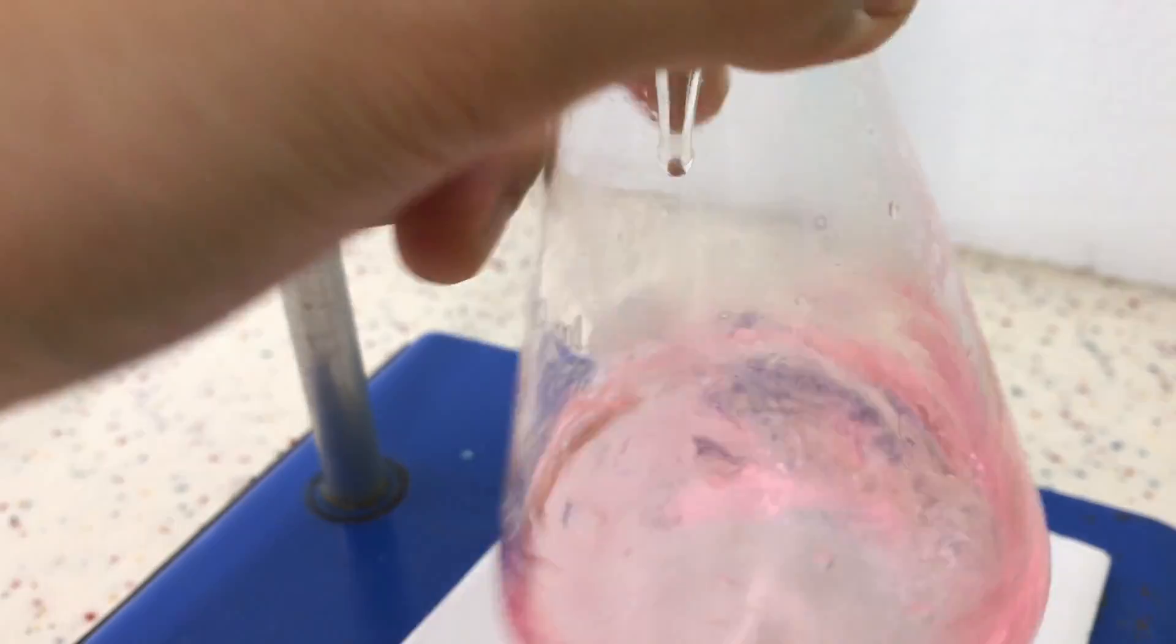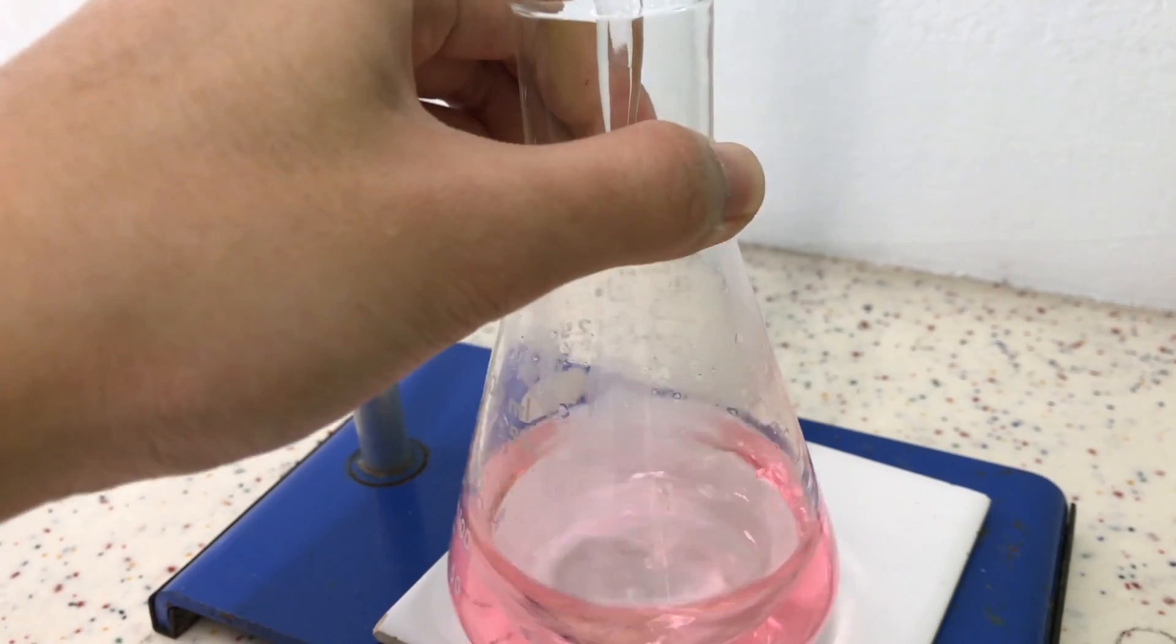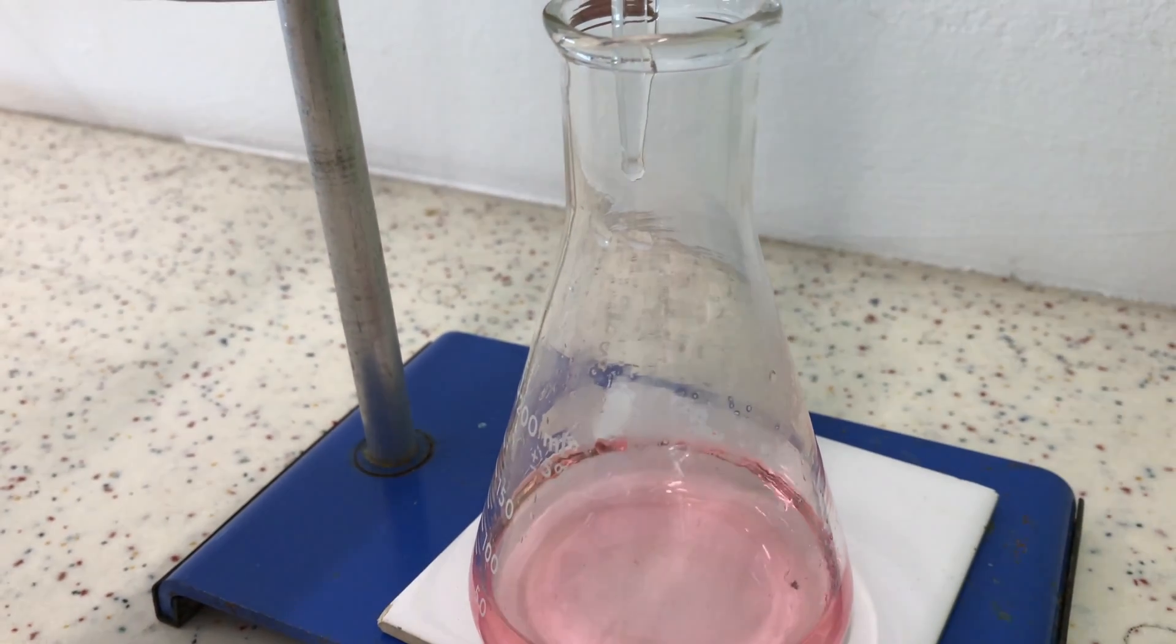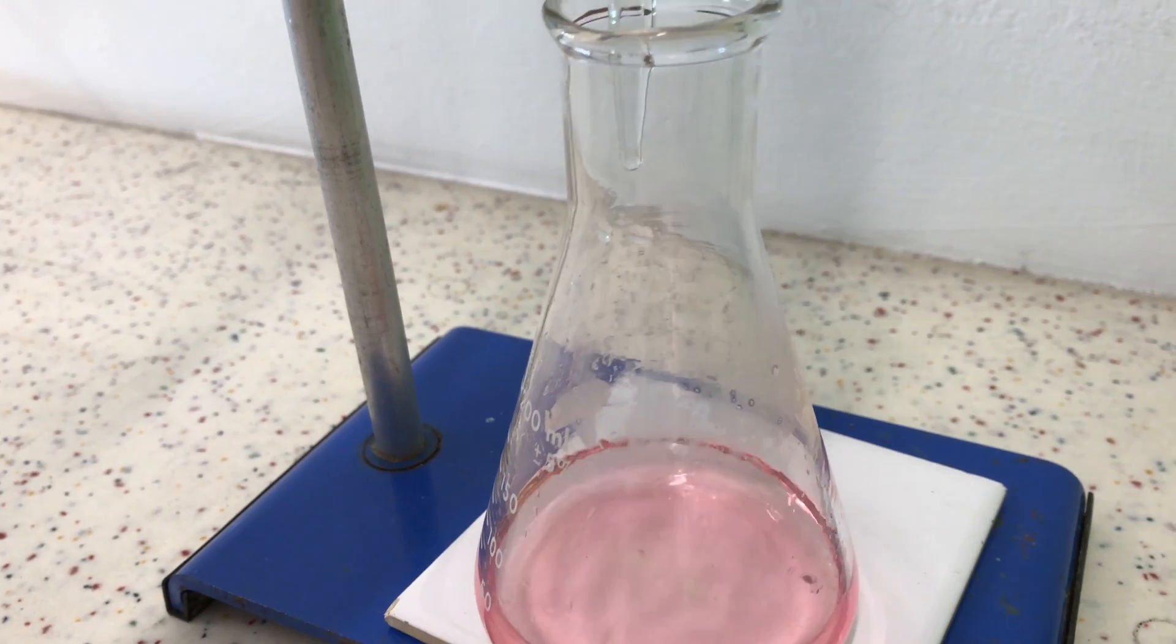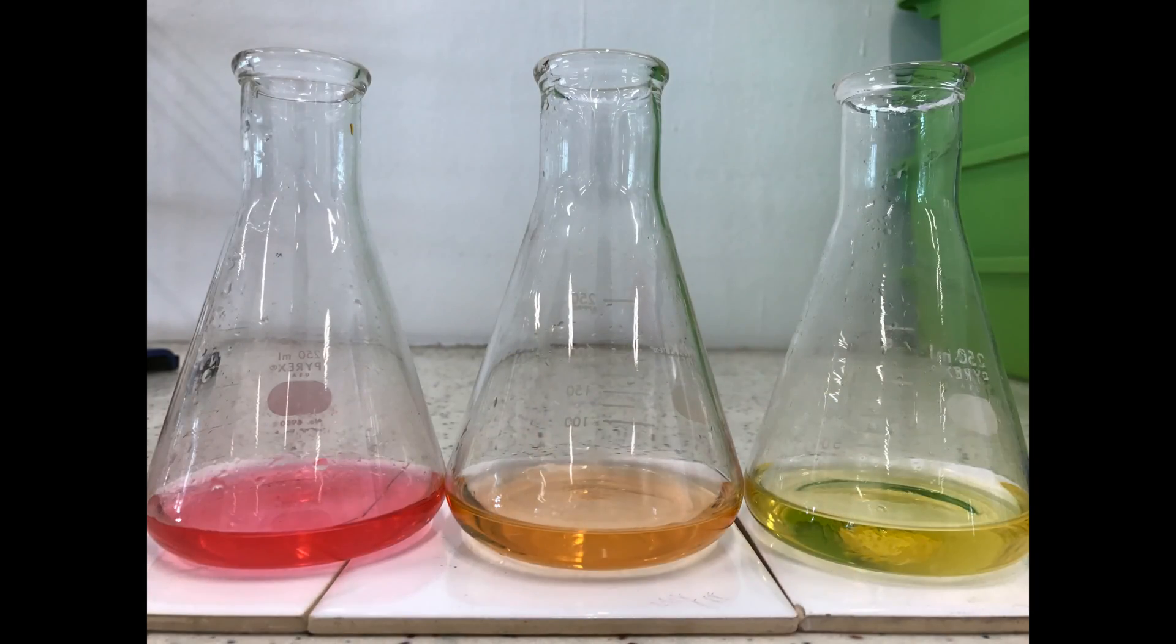We will gently turn on the tap to allow one drop of titrant to enter the conical flask, and then swirl carefully after every drop. We will continue to do dropwise addition until we reach the end point. In this case, the end point colour change should be from red to orange.